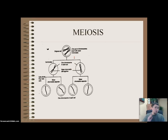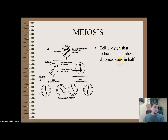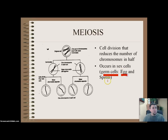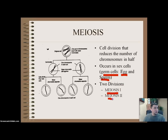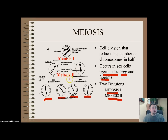So to overview what meiosis is: it is a process of cellular division that reduces the number of chromosomes in half. It occurs in sex cells, otherwise known as germ cells — an example being an egg or sperm. Meiosis occurs in two parts: meiosis 1 and meiosis 2. In meiosis 1, we multiply DNA just like in mitosis, then chromosomes go in either direction, and eventually we get four new cells through meiosis 2.